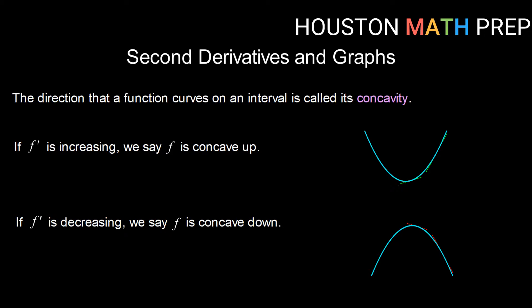And if f prime is increasing, we know how to find out if something is increasing. We look for its derivative, so f prime's derivative would be f double prime, to be greater than zero or positive. So another way of saying that if f prime is increasing is to say if the second derivative is positive, then the original function is concave up.